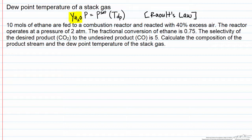In this problem we have 10 moles of ethane, and it's going to be combusted with 40% excess air. This means we'll have O2 in our product gas, as well as N2. In addition, the fractional conversion of ethane is 0.75, which means we'll have ethane in our product gas. And finally, the selectivity of the desired product, which is CO2, versus the undesired product, which is CO, is going to equal 5. This means that we have incomplete combustion occurring as well.